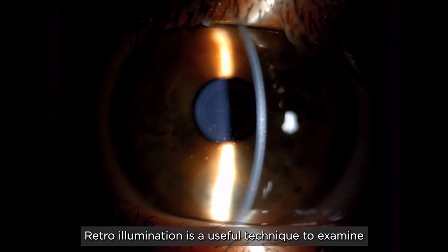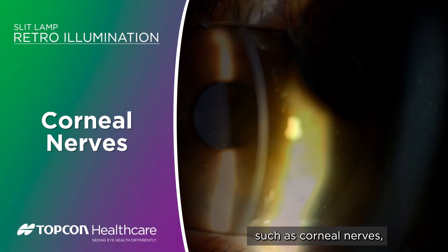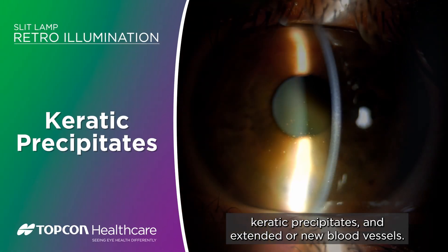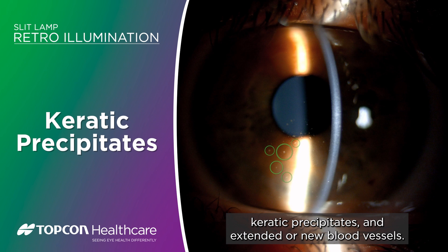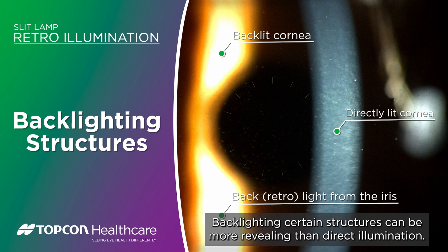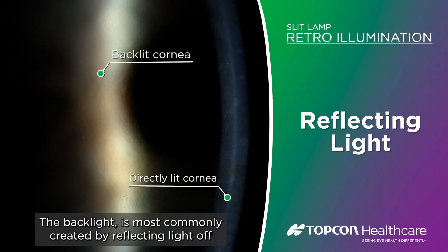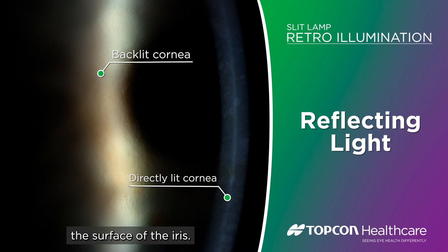Retro illumination is a useful technique to examine low contrast structures on the cornea such as corneal nerves, keratic precipitates and extended or new blood vessels. Backlighting certain structures can be more revealing than direct illumination. The backlight is most commonly created by reflecting light off the surface of the iris.